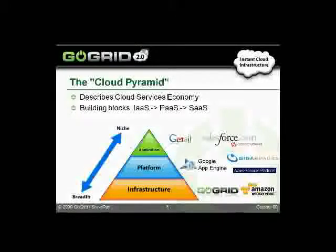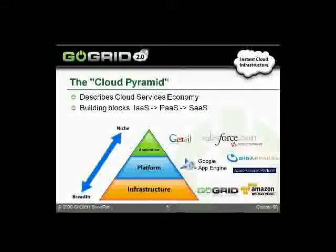The type of companies representing infrastructure as a service would be folks like GoGrid and Amazon Web Services. In the platform area: Google App Engine, the combined solution with GigaSpaces and GoGrid, and Microsoft's Azure services platform. Then at the application level, companies like Salesforce as well as Google with Gmail.